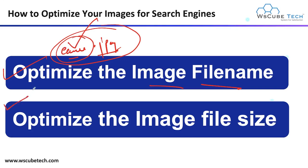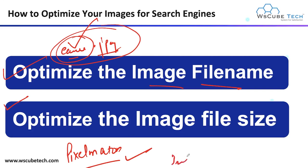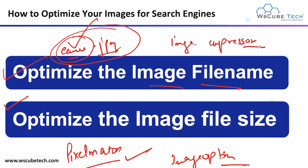Next, optimize the image file size. Large images take longer to load and can negatively impact the user experience, especially for mobile users. A good practice is to use an image optimization tool that can reduce the file size without losing quality. For all the images used in posts, you can open them in Pixelmator, resize them, and export them as PNG or JPG. Before uploading to the website, optimize the file size with a tool like ImageOptim. This can reduce file size without affecting quality. Another great tool is an image compressor.